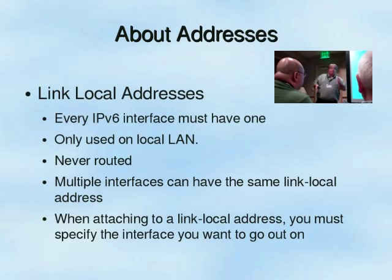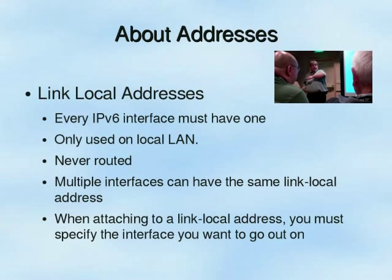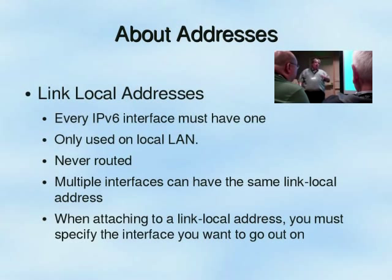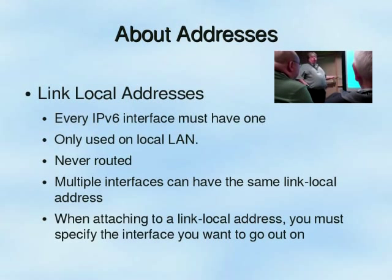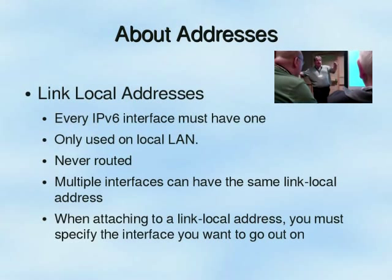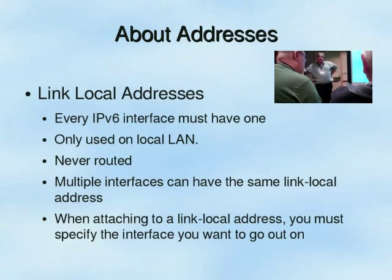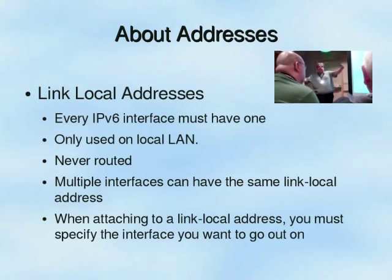Multiple interfaces can have the same link local address — ETH0, ETH1, ETH2, or multiple VLAN interfaces can all utilize the same link local address. That's why whenever we use it, we must also specify the interface that we want that packet to go out on to find that link local address. We do that by adding the percent sign and the interface name at the end of the link local address during the connection process.